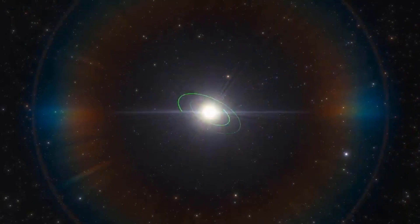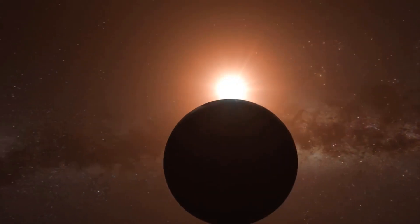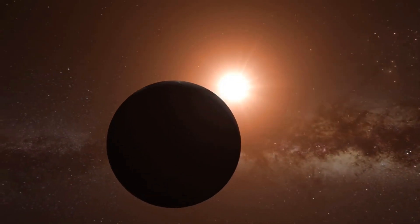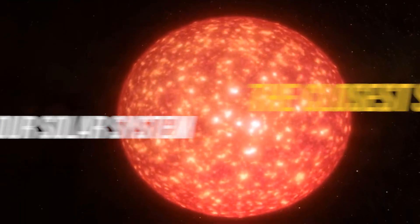A celestial object which is held together by its gravity and consists of a luminous spheroid of plasma can be classified as a star. In today's video, let's talk about some of the closest stars to our solar system and what makes them unique.